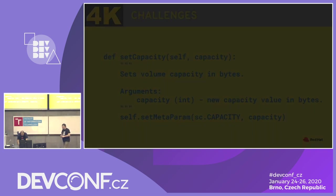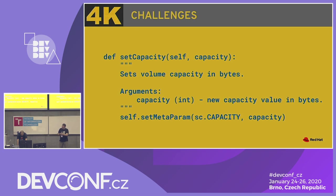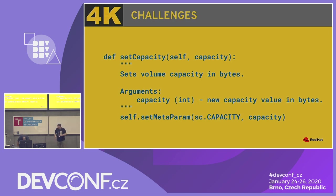Here's an example of an internal VDSM API. It used to be called set_size, accepting size in sectors hard-coded to 512, and writing that to storage metadata. Now it's called set_capacity, accepting capacity in bytes and writing a new key to the metadata. So everywhere in VDSM, instead of 'size' you will find 'capacity', which matches other places in VDSM and makes the system more coherent.